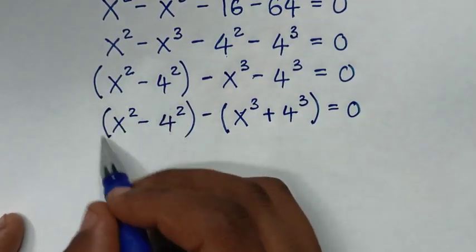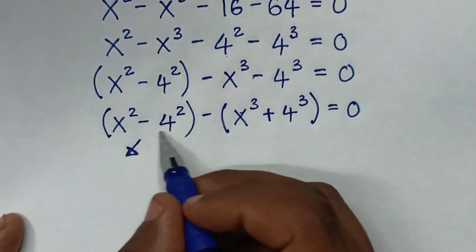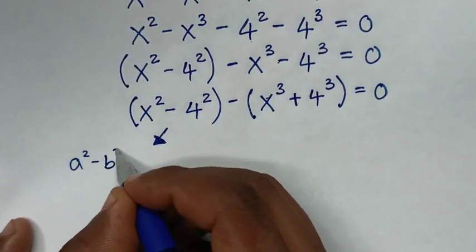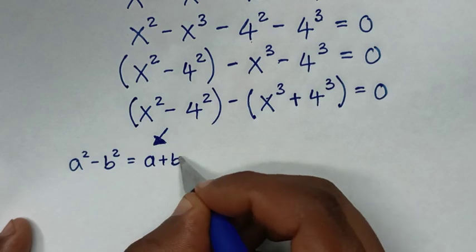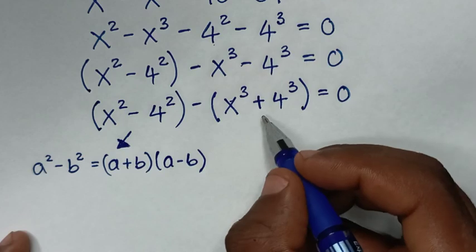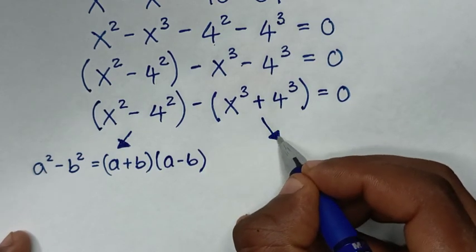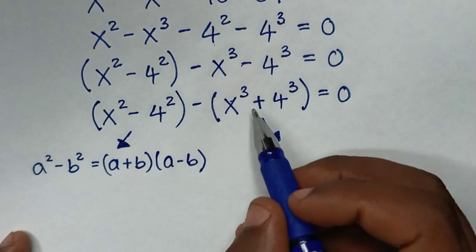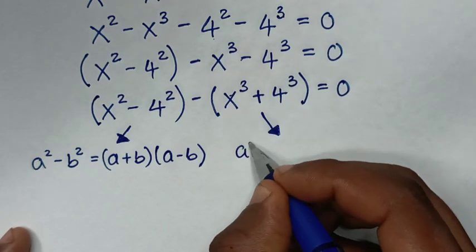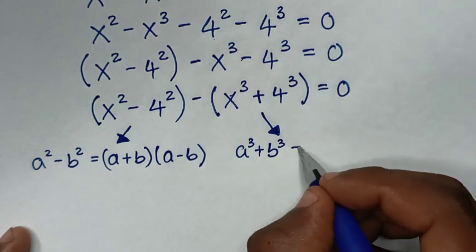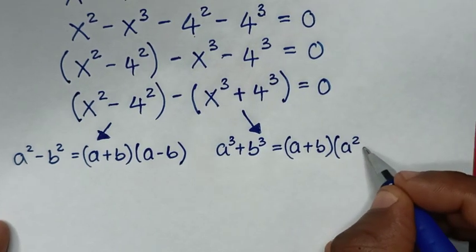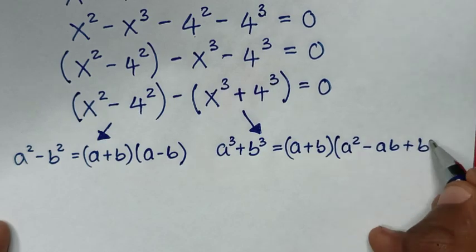From this part, inside the bracket is in the form of a perfect square, so we will apply the perfect square rule: a squared minus b squared equals (a plus b)(a minus b). And from this part, it is in the form of a perfect cube, so we apply the sum of cubes rule: a cubed plus b cubed equals (a plus b)(a squared minus ab plus b squared).